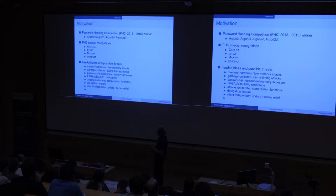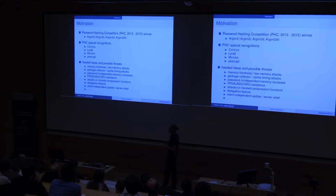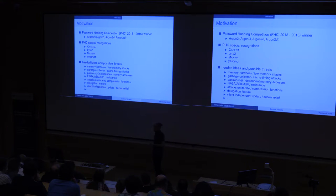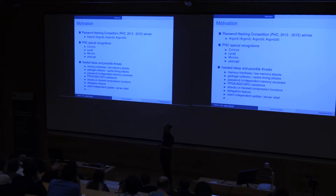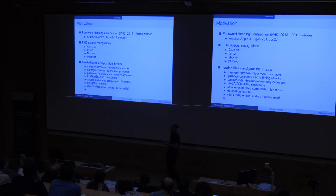There was also a discussion about password-dependent and independent memory accesses — based on the kind of memory access, your scheme might be vulnerable to cache timing attacks. FPGA, ASIC, and GPU resistance was a big topic. Kofatovich and colleagues came up with attacks on iterated compression functions, which highly depends on the hash function deployed as a basic primitive in your password hashing scheme. There was a neat delegation feature in the password scheme MAKWA based on asymmetric cryptography. Two major properties called client-independent update — which allows updating the password hash without any client interaction, useful for inactive accounts — and server relief, where the main effort of computing the password hash is shifted to the client, were introduced.